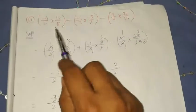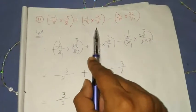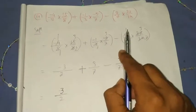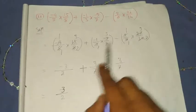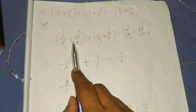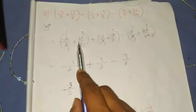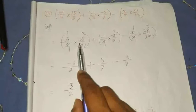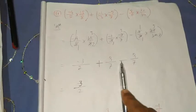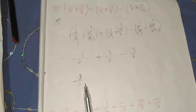The next question is: minus 4 by 5 into 15 by 8, plus minus 1 by 3 into minus 9 by 7, minus 2 by 9 into 27 by 14. First write the equation. Divide the numerator and denominator by the common factor or greatest common factor. You will get minus 3 by 2 plus 3 by 7 minus 3 by 7. We can cancel it, and we will have minus 3 by 2.